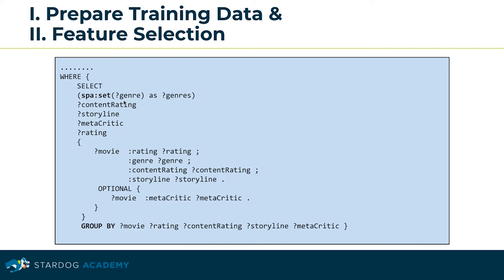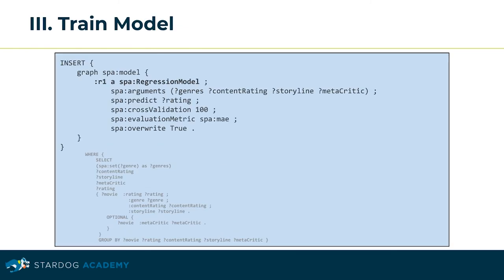Moving to the model training step, this is an INSERT query as we've already seen in the classification example. We create a model named R1 that will predict the movie's average user rating based on its genres, content rating, storyline, and metacritic properties. Since rating is a numeric value, this is a regression task, so R1 is identified with class type spa:RegressionModel.